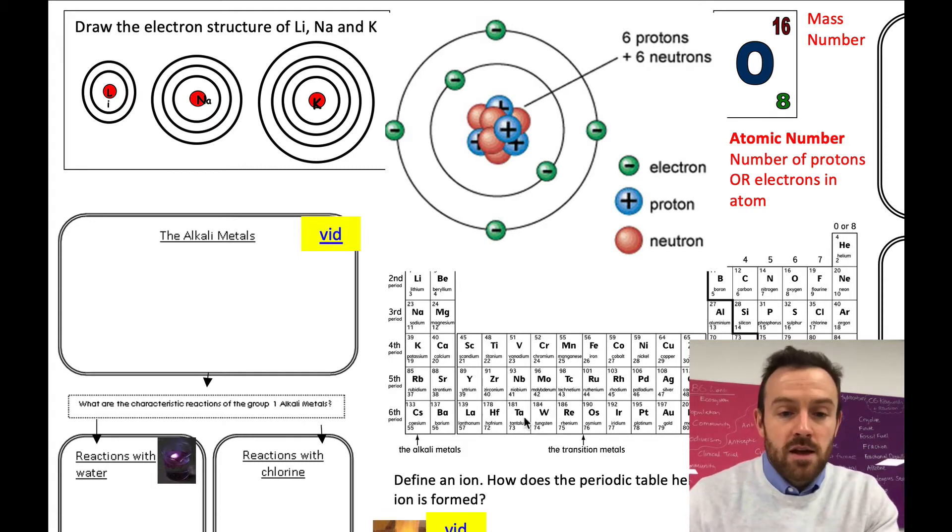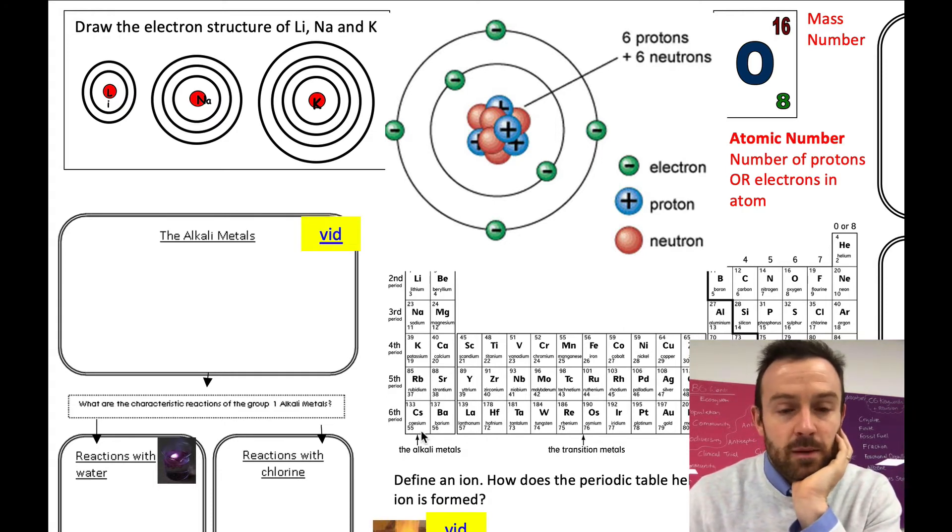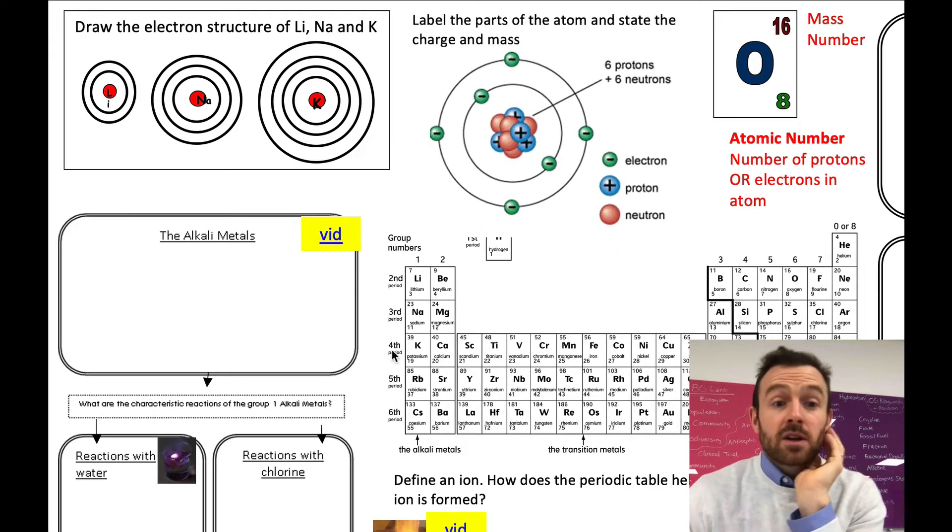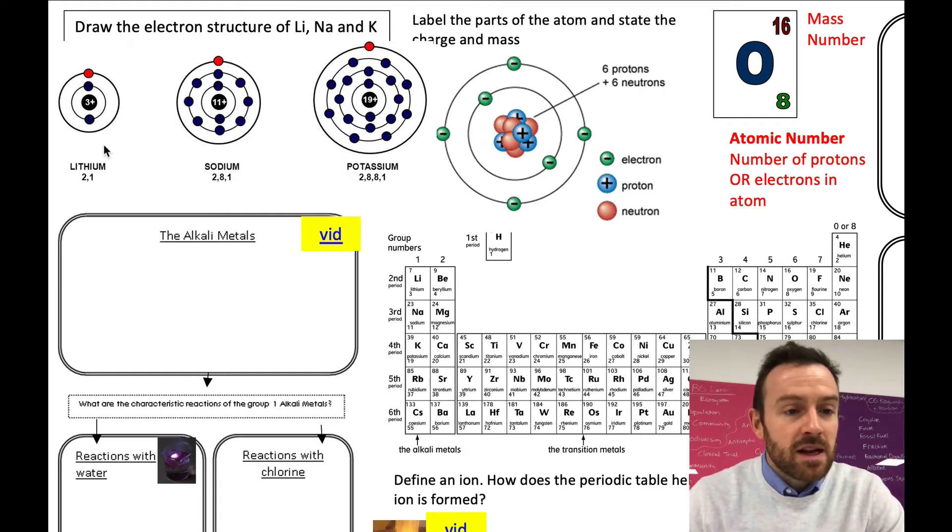But what about the alkali metals, the group one? Now these are these elements down here. So here I've got a space where you could try if you want to, to put in the electron arrangements of lithium, sodium and potassium using the periodic table. Have a go at that if you'd like to pause the video and come back in a couple seconds. Okay, did you get it right? Here is what you should have drawn. So lithium has an electron arrangement of 2, 1. Sodium, 2, 8, 1. And potassium is 2, 8, 8, 1.